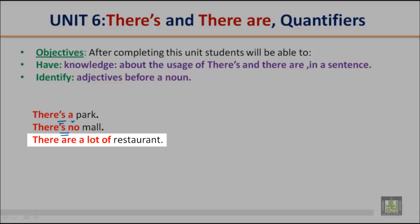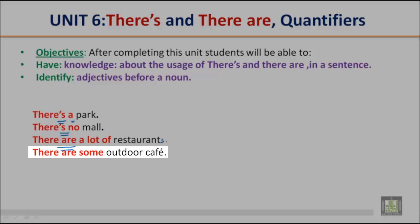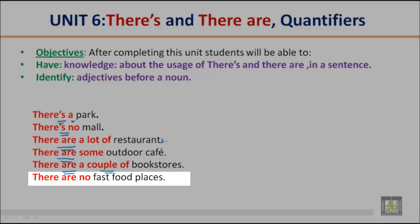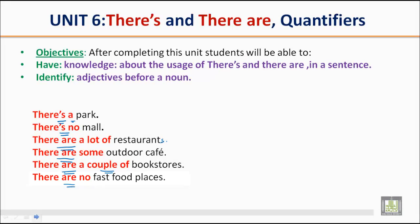There are a lot of restaurants — so we use there are for plurals. There are some outdoor cafes, that means more than one. There are a couple of bookstores, that means few. There are no fast food places — this sentence is also in the plural sense. Now, there's is the contraction for there is.